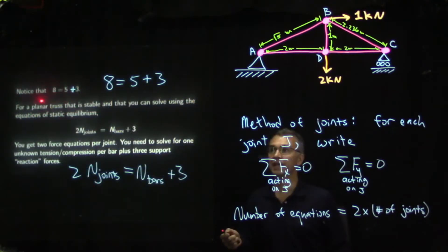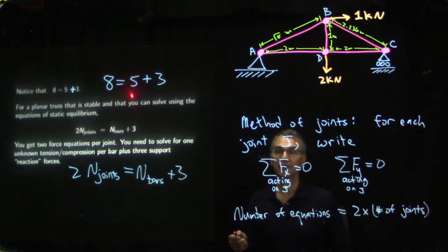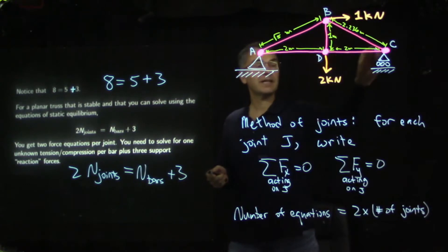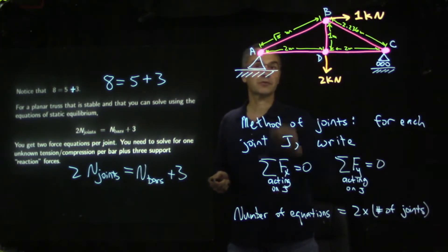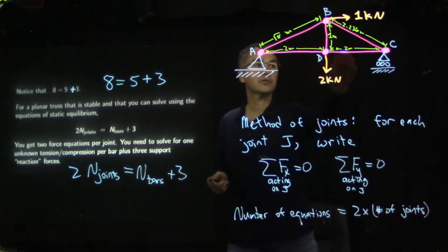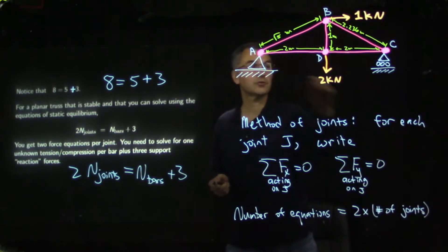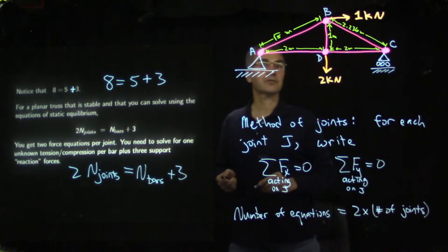Notice that eight equals five plus three. We have eight equations available, five unknown bar forces, and three unknown reaction forces: two force equations at each of the four joints gives eight equations, five unknown bar forces, and three unknown reaction forces. That's good — we have exactly the same number of unknowns as equations.